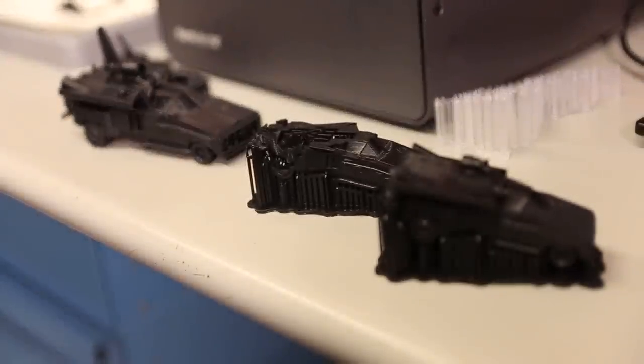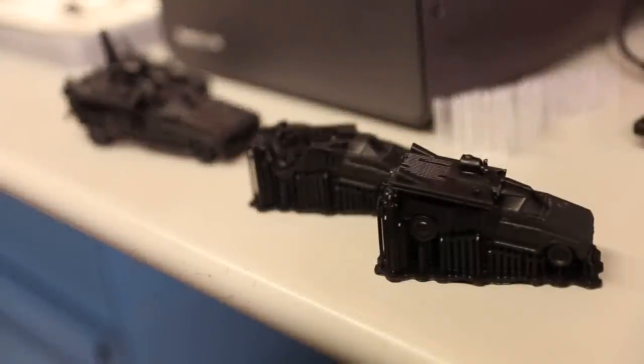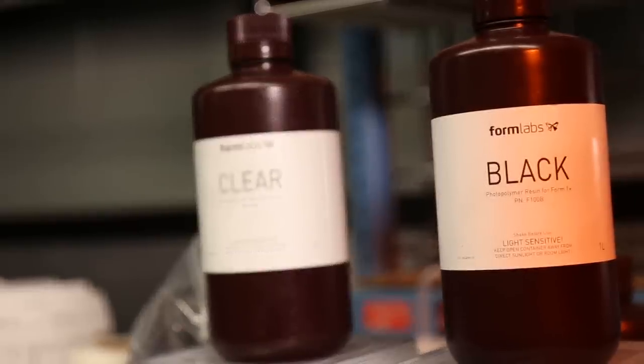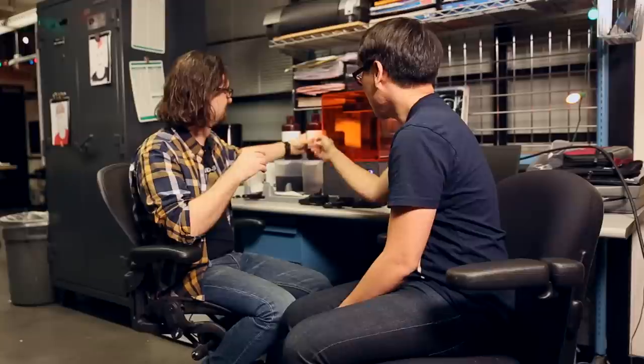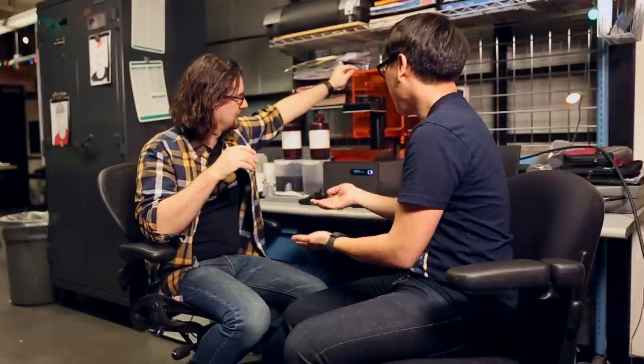So what does the Form 1 use? So the Form 1 was developed by graduates from MIT, so they know what they're doing. And it's a resin printer. So the motivator that I did for Adam, that was done on a really high-resolution machine in resin. So it uses a UV-cured liquid resin, and you can get very, very fine detail. The plastic doesn't come in spindles. It comes in these containers.